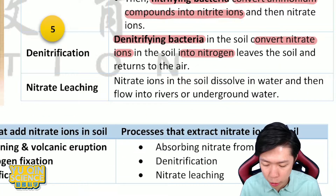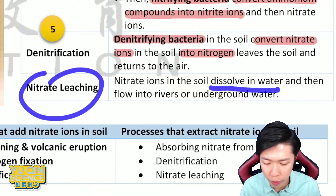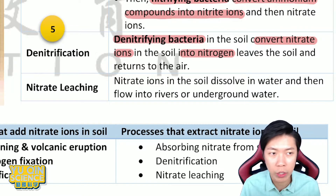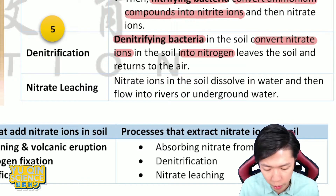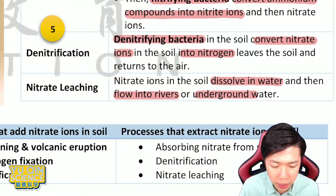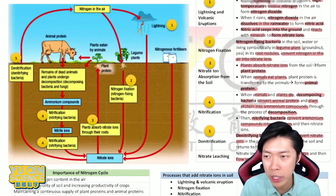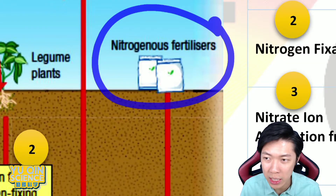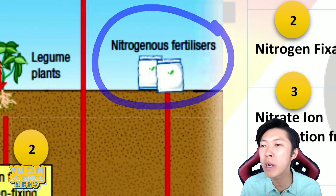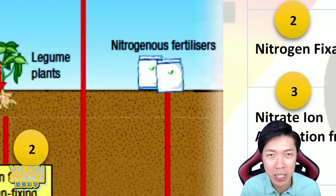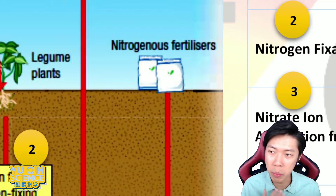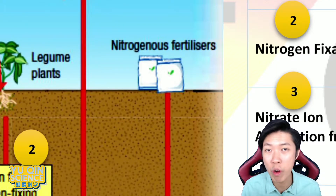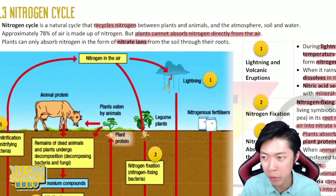Nitrate leaching is a natural process where nitrate in the soil dissolves in water from rain and may flow into rivers or underground water — it goes to waste. However, if too much fertilizer is added, there is excess nitrogen in the water and rivers, which will cause a problem called eutrophication, which we cover in chapter 3.